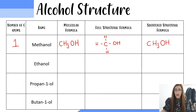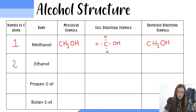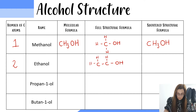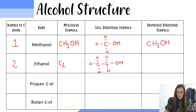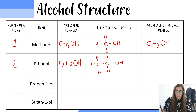The second alcohol in this group is ethanol and it has two carbons. Its structural formula has two carbons in a chain with a hydroxyl group at the end. Each carbon is surrounded by four bonds and has hydrogens attached. The molecular formula for this molecule is C2H5OH. The shortened structural formula: the first carbon in the chain has three hydrogens attached, the second carbon has two hydrogens, and we have an OH at the end.